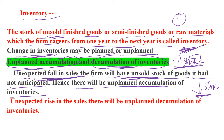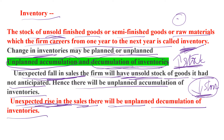Then what is unplanned decumulation? It means an unexpected fall in the stock of inventory. When will inventory decrease? When there is an unexpected rise in sales. If demand for their product increases and was not anticipated, the firm has to take items out of inventory, so the stock decreases. So an unexpected rise in sales leads to unplanned decumulation of inventories.